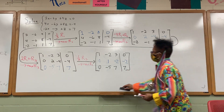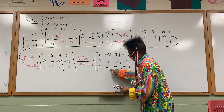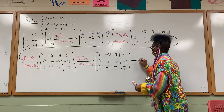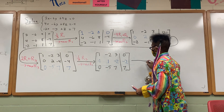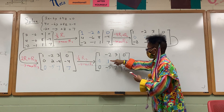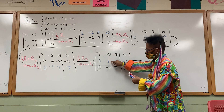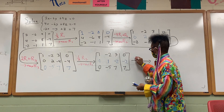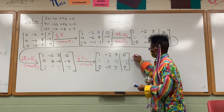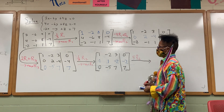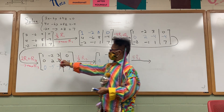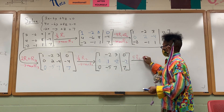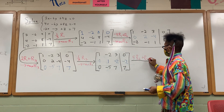We have a one now. Now I have to make a zero here and then here. In our class, we're doing it in that order so that we can have some sort of order in the universe. To make that negative five into zero, I need to add five to that. So it's five times row two, added to row three to get a new row three.